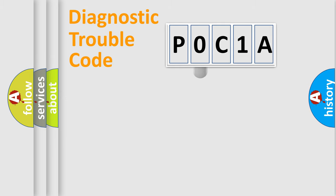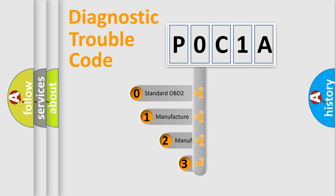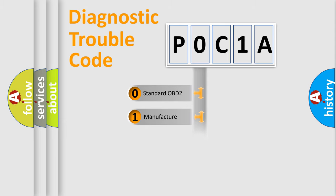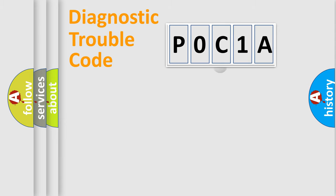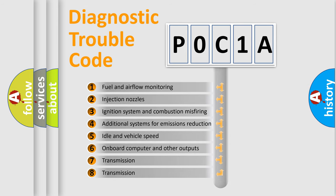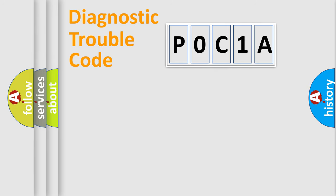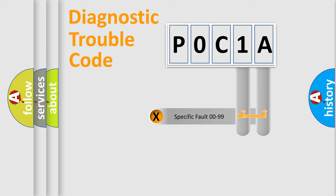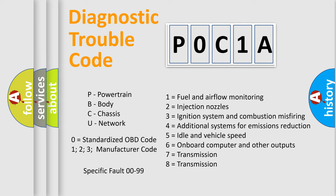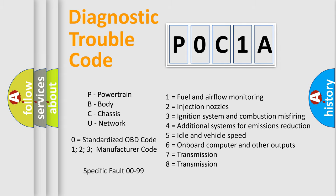This distribution is defined in the first character of the code. If the second character is expressed as zero, it is a standardized error. In the case of numbers 1, 2, or 3, it is a more specific car-manufacturer error. The third character specifies a subset of errors. This distribution is valid only for the standardized DTC code, and only the last two characters define the specific fault of the group.